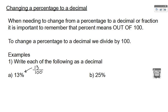The fraction sign means divide, so if we want to change this to a decimal we need to do 13 divided by 100. How do we divide by a hundred? The digits move to the right — think about your place value. There's also a trick: think about the decimal point being at the end of the number. When we divide by a hundred, it jumps two places to the left. So my answer would be 0.13.